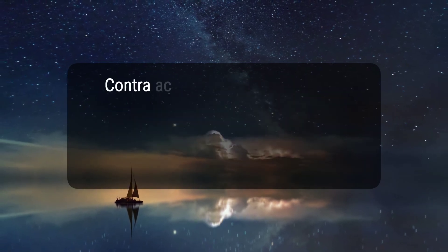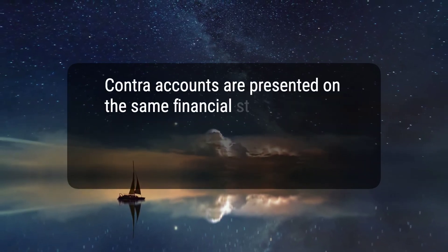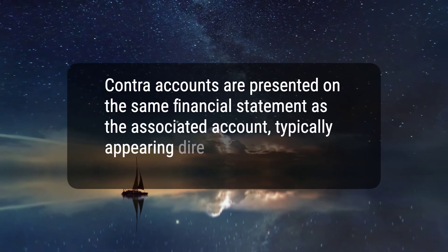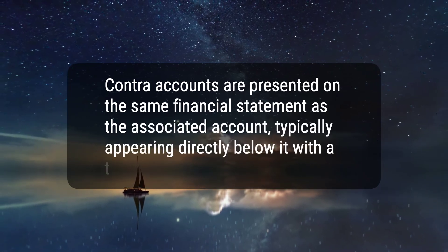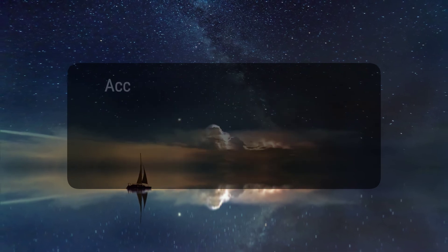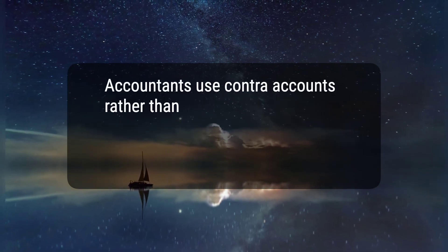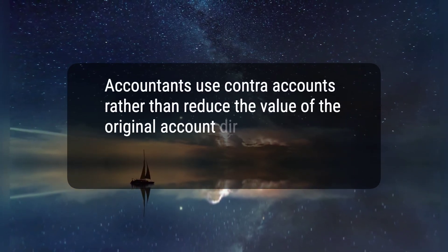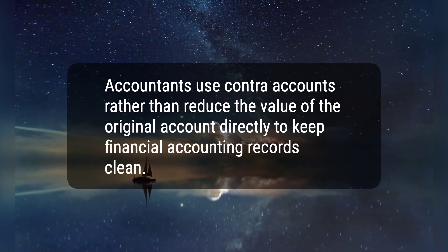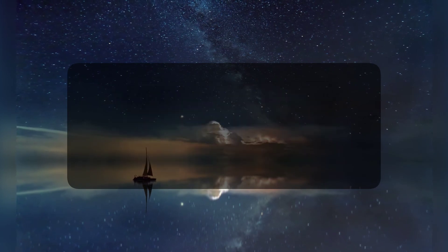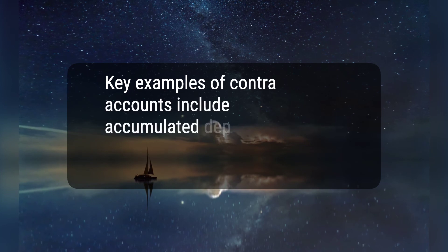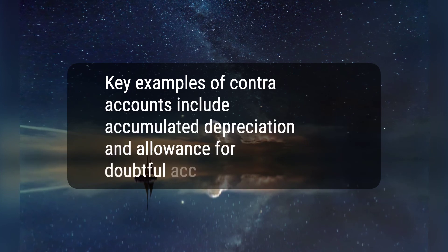3. Contra Accounts are presented on the same financial statement as the associated account, typically appearing directly below it with a third line for the net amount. 4. Accountants use Contra Accounts rather than reduce the value of the original account directly to keep financial accounting records clean. 5. Key examples of Contra Accounts include accumulated depreciation and allowance for doubtful accounts.